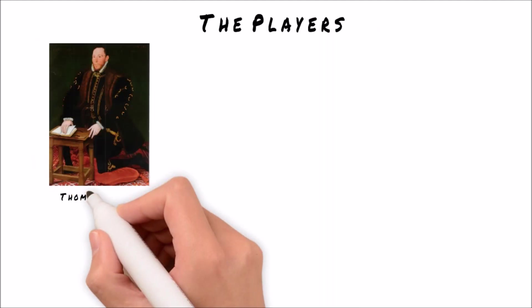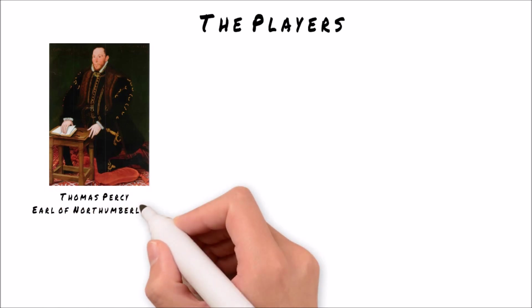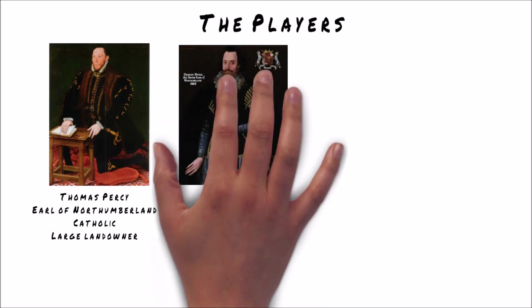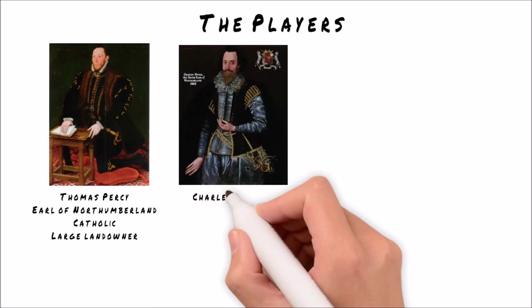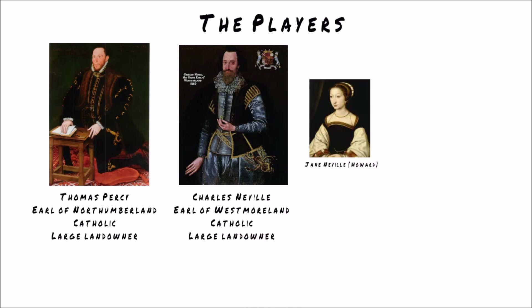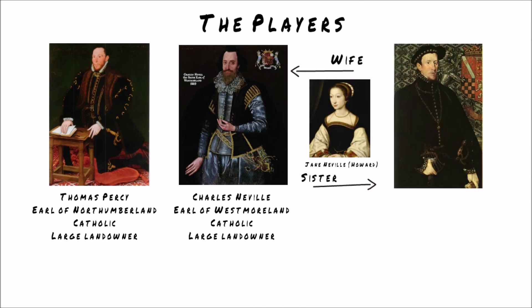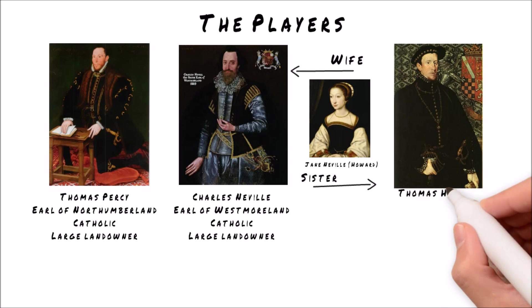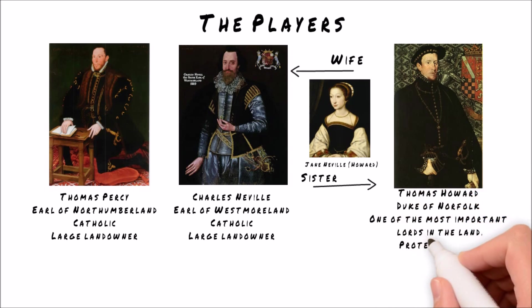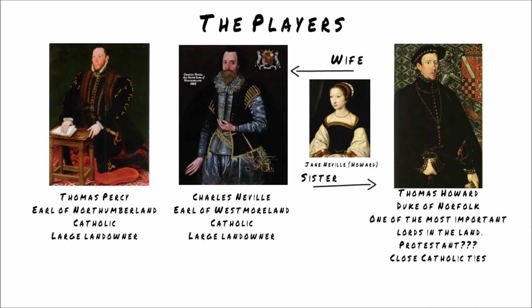Here's Thomas Percy, the Earl of Northumberland — a major Catholic landowner — and his wife Anne Percy. Additionally we've got Charles Neville, the Earl of Westmoreland, another major Catholic landowner, and his wife Jane Neville, previously called Jane Howard. She is the sister of Thomas Howard, the Duke of Norfolk — a senior nobleman and Protestant, but his family have a history of being Catholic and he has very close ties with other Catholic families.